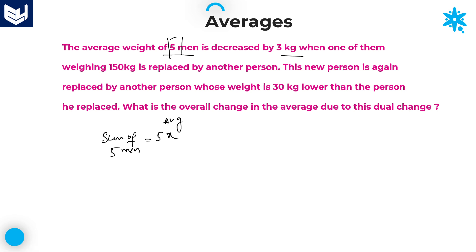Because average is x and the number of persons are 5, giving 5x. Now, the average is decreased by 3. When the average is decreased by 3, that means after replacing the 150 kg person with another person, we are replacing that person weighing 150.